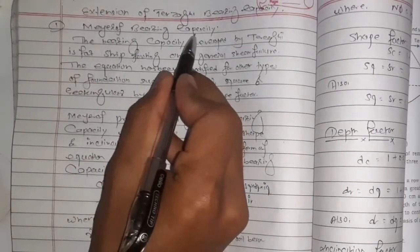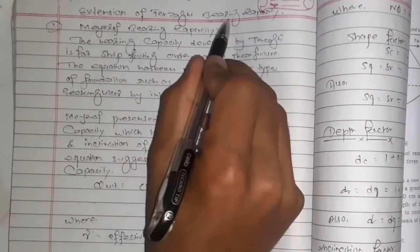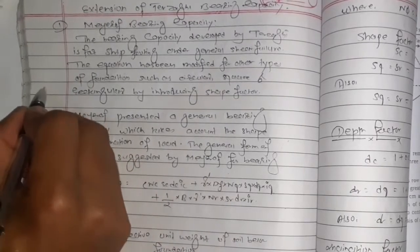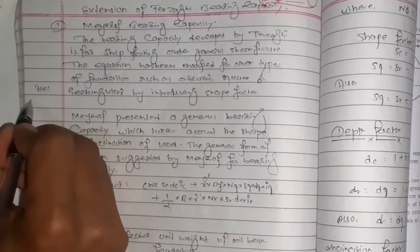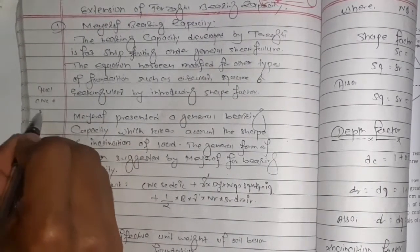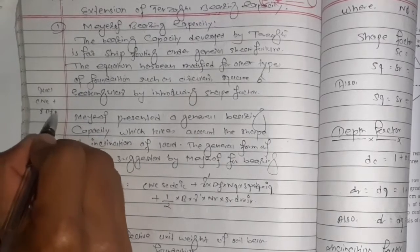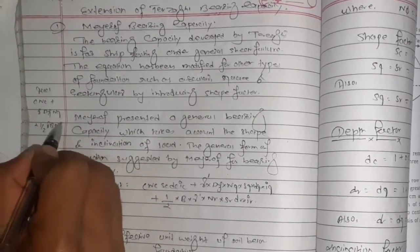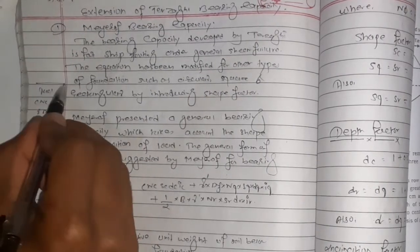For Meyerhof, we will see the formula. Q ultimate formula is: c·Nc + q·γ·df·Nq + 1/2·γ·B·Nγ.